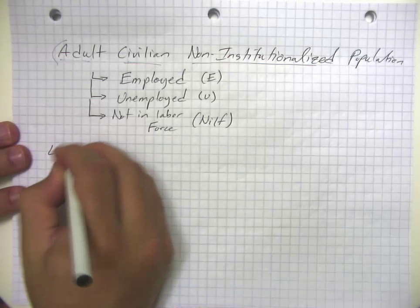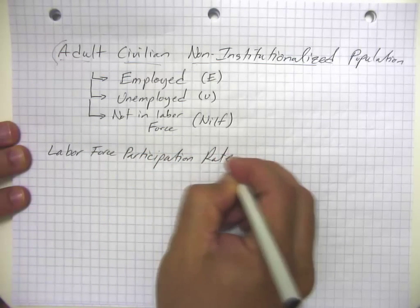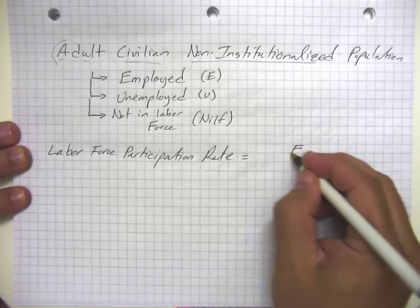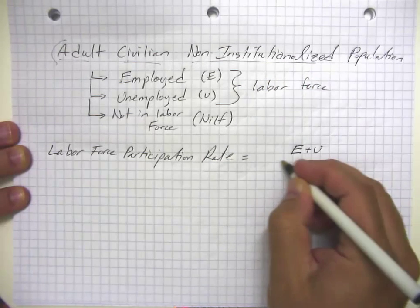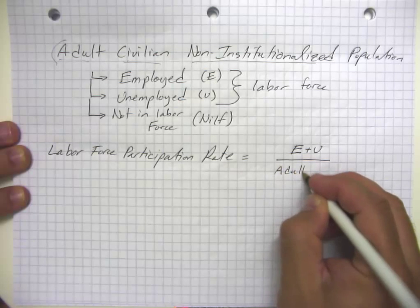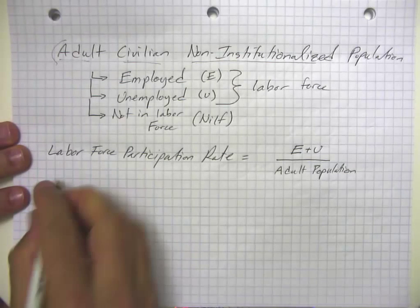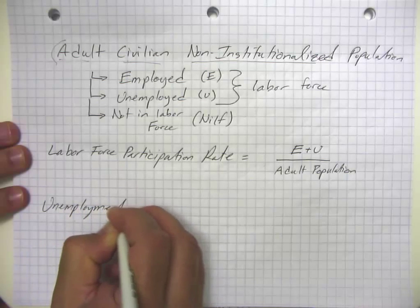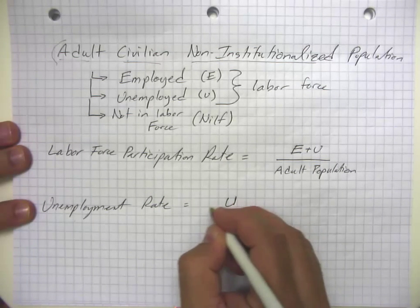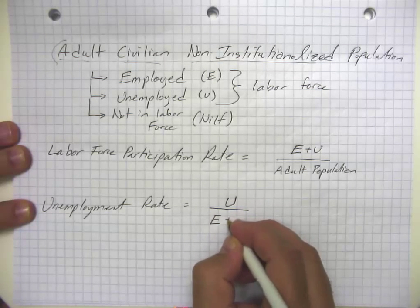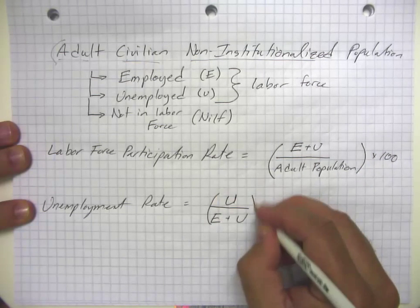The labor force participation rate is the total labor force — that's all employed plus all unemployed people — divided by the total adult, civilian, non-institutionalized population, times 100 to convert to a percent. The unemployment rate is the number of unemployed people divided by the total labor force (employed plus unemployed), times 100.